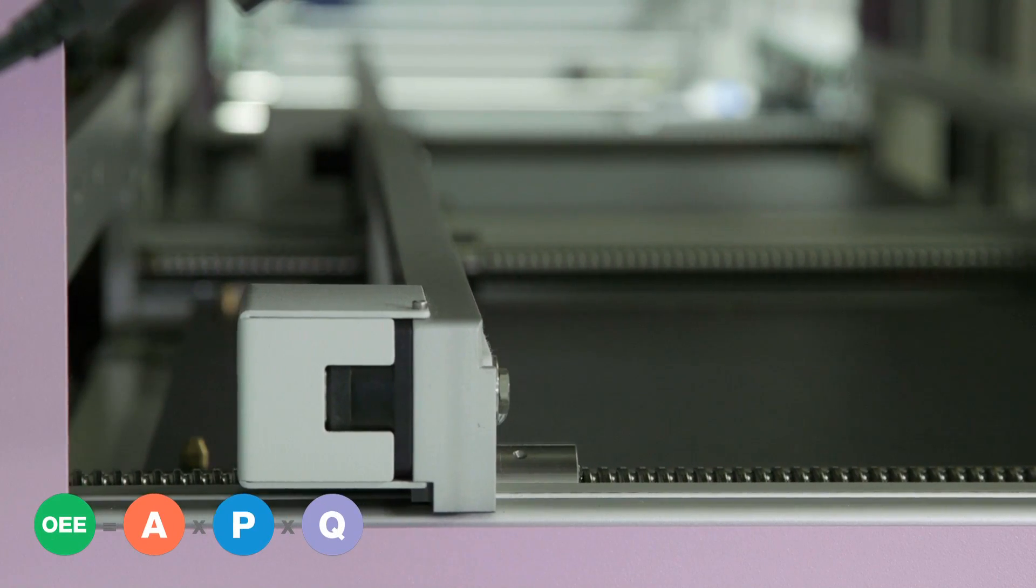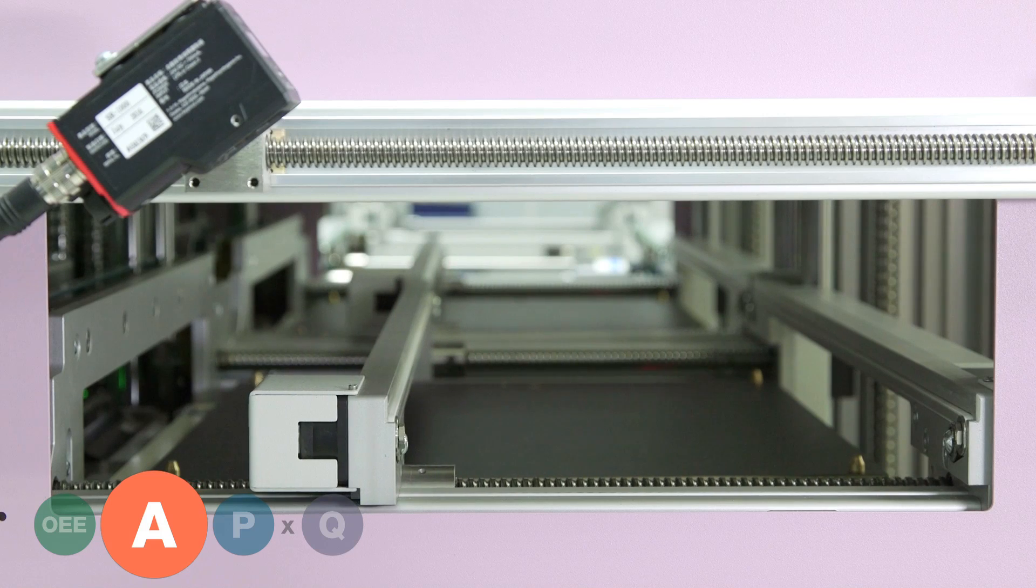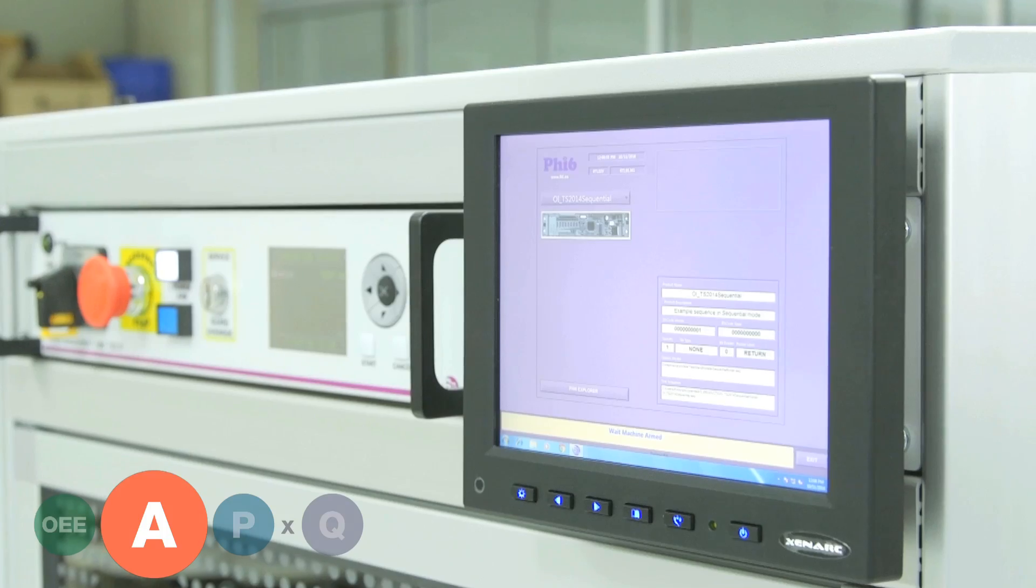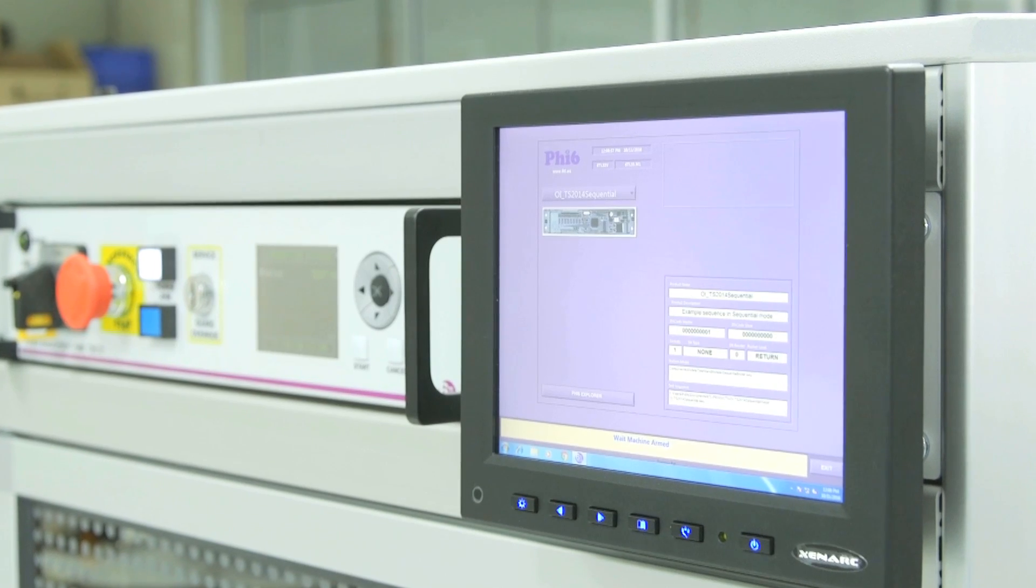When a new test fixture is detected, the transport belts will automatically adjust to the corresponding product width and the correct test sequence will be automatically selected.